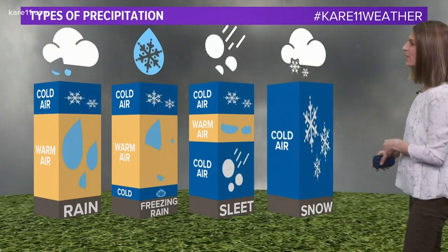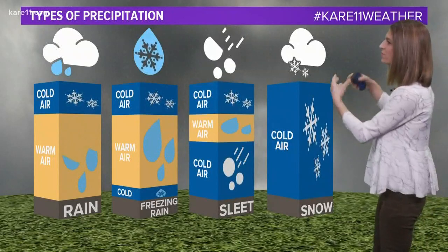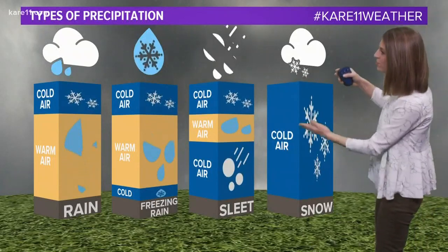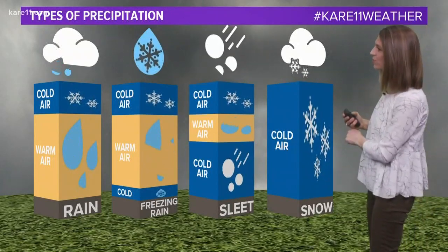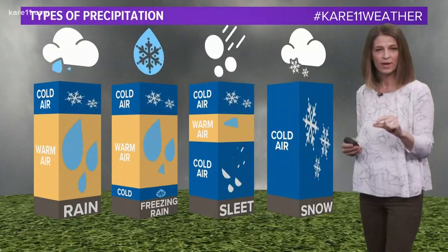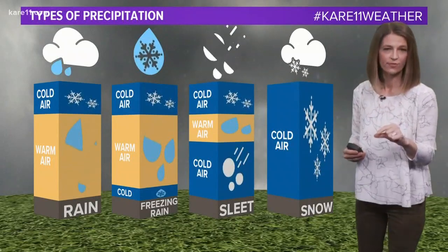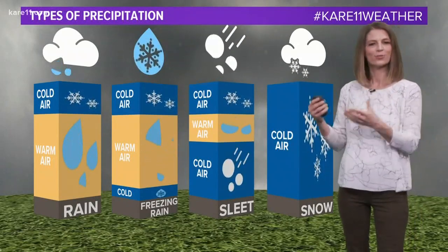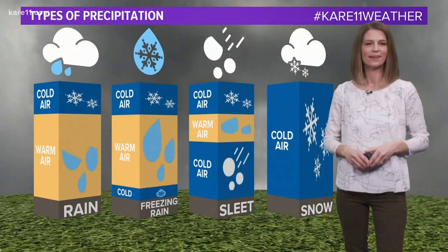And when we get snow, of course, the ice crystals are not allowed to melt all the way down to the surface. Either there's very little warm air near the surface above freezing, or none at all, so they stay falling as snowflakes.